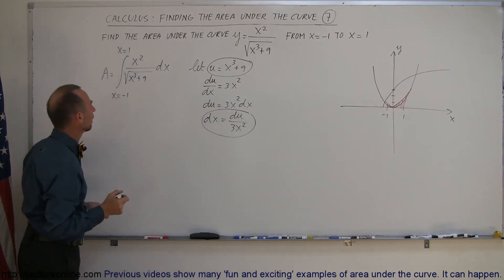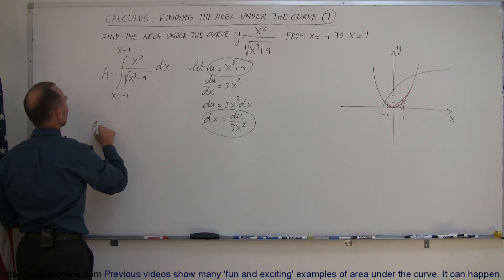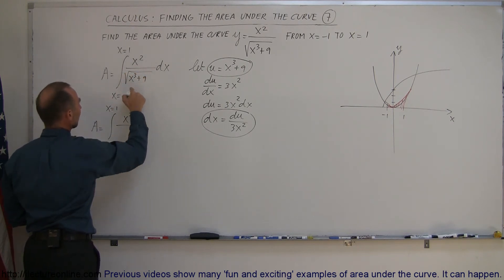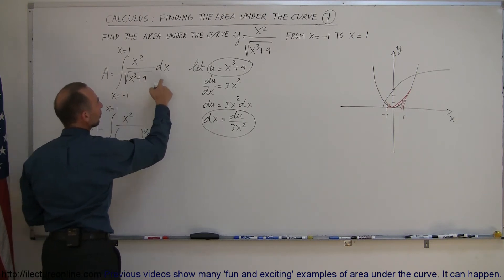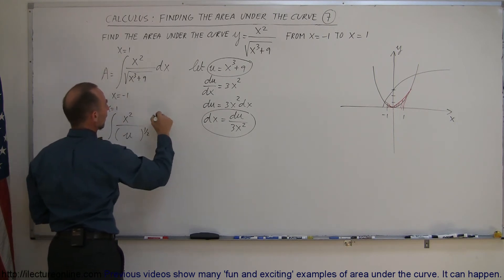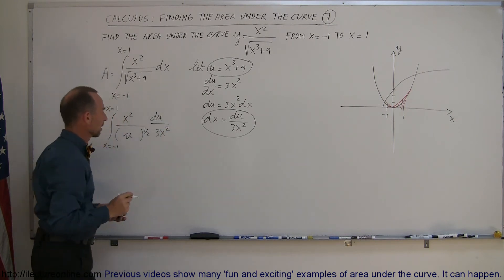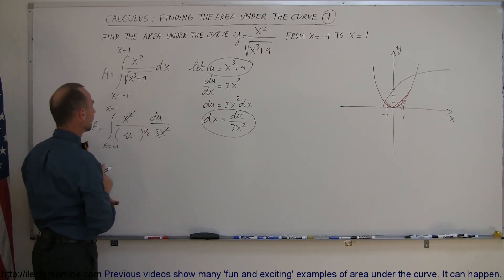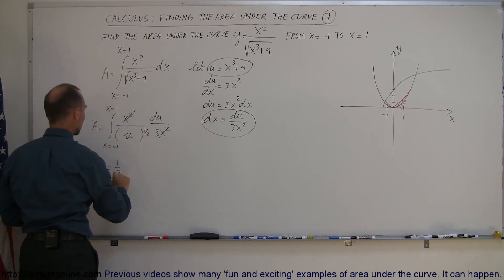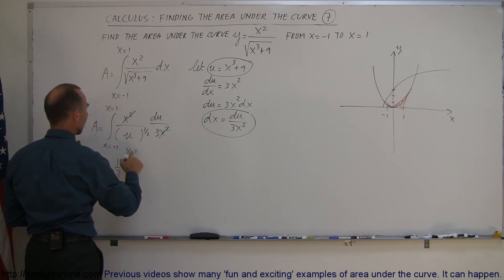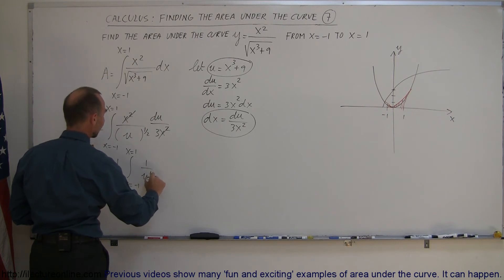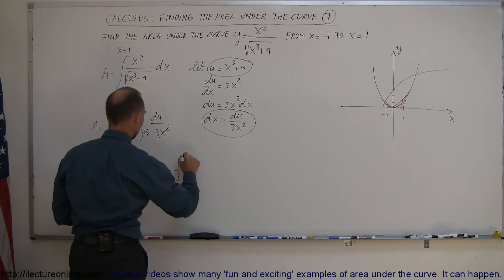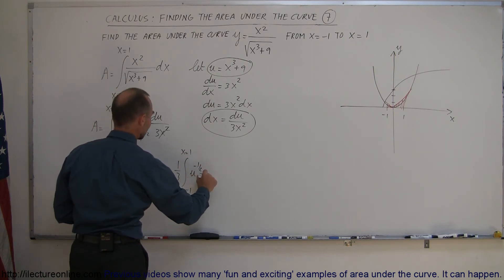Substituting into the integral: the numerator stays as x squared, the denominator becomes the square root of u, and dx is replaced by du divided by 3x squared. The x squared in the numerator cancels with the x squared in the denominator, leaving no x's in the integral. The 1/3 can be factored out, giving us 1/3 times the integral of 1 over u to the 1/2, which equals 1/3 times the integral of u to the negative 1/2 du. Now I'm ready to integrate.